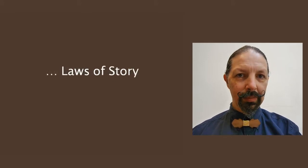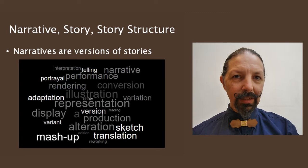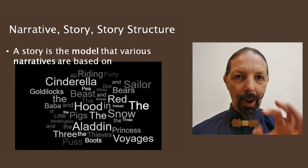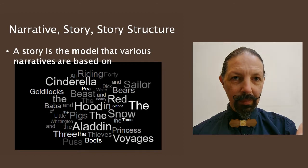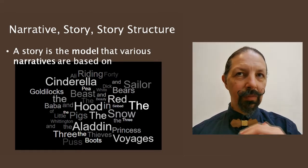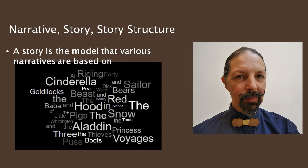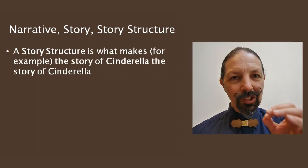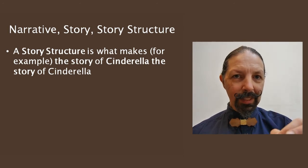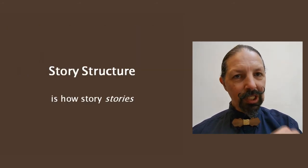And there are laws of story. We have different story structures. Now, story structures are not narratives. Narratives are individual performances or versions of stories. Stories are particular, recognisable meta plots, if you like. The rags to riches story — Cinderella. The death and rebirth story — Snow White, Sleeping Beauty. All these are recognisable. And a story structure is what makes one meta structure different from another. It's what makes the story of Cinderella, for example, the story of Cinderella. Story structure is how story stories.